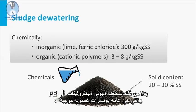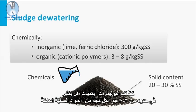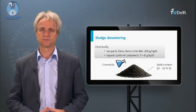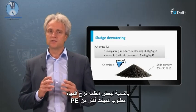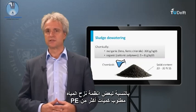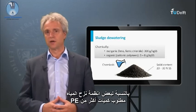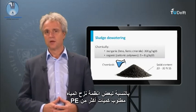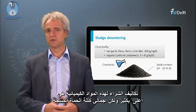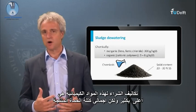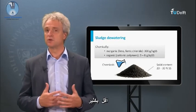Alternatively, polyelectrolytes (PE) are used, which are generally organic cationic polymers added in much lower amounts in the range of 3 to 8 grams per kilogram of suspended solids. For some dewatering systems, some more PE is required. The purchase costs for these chemicals are much higher, but the total sludge mass produced is much less.